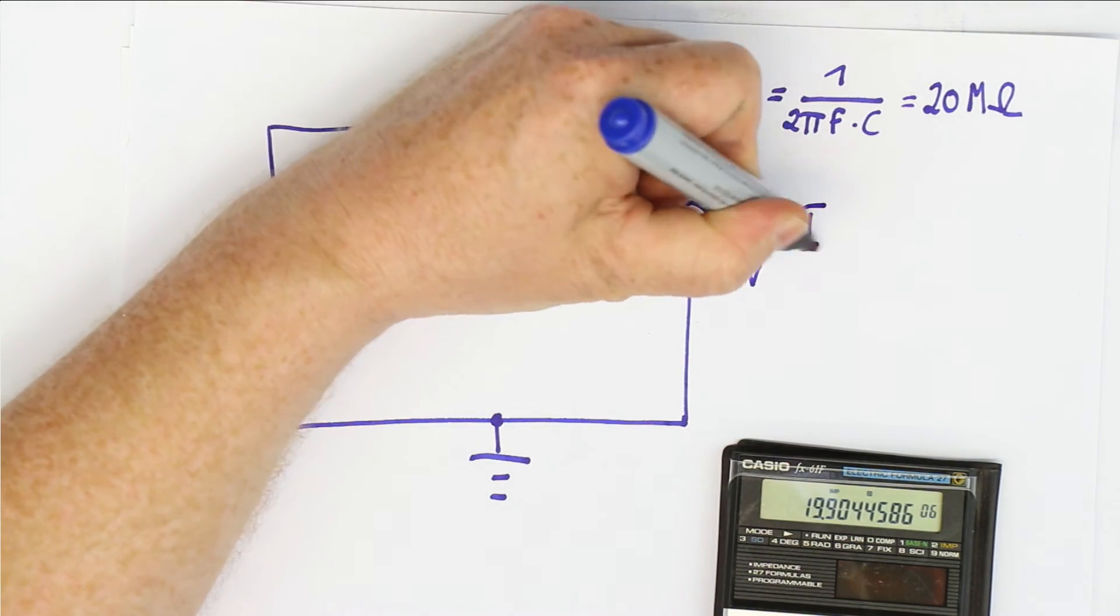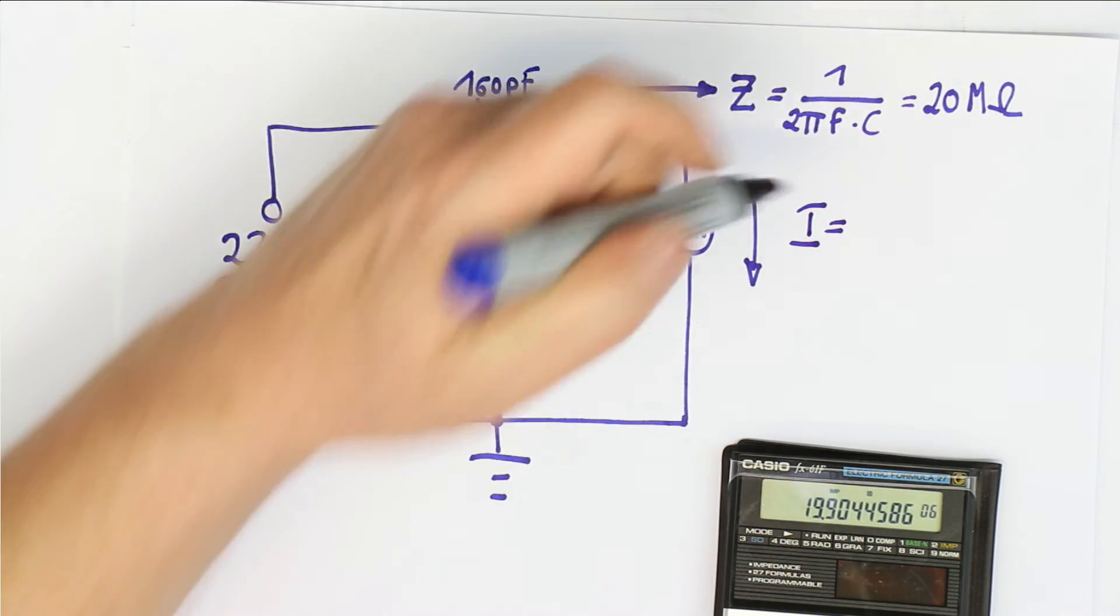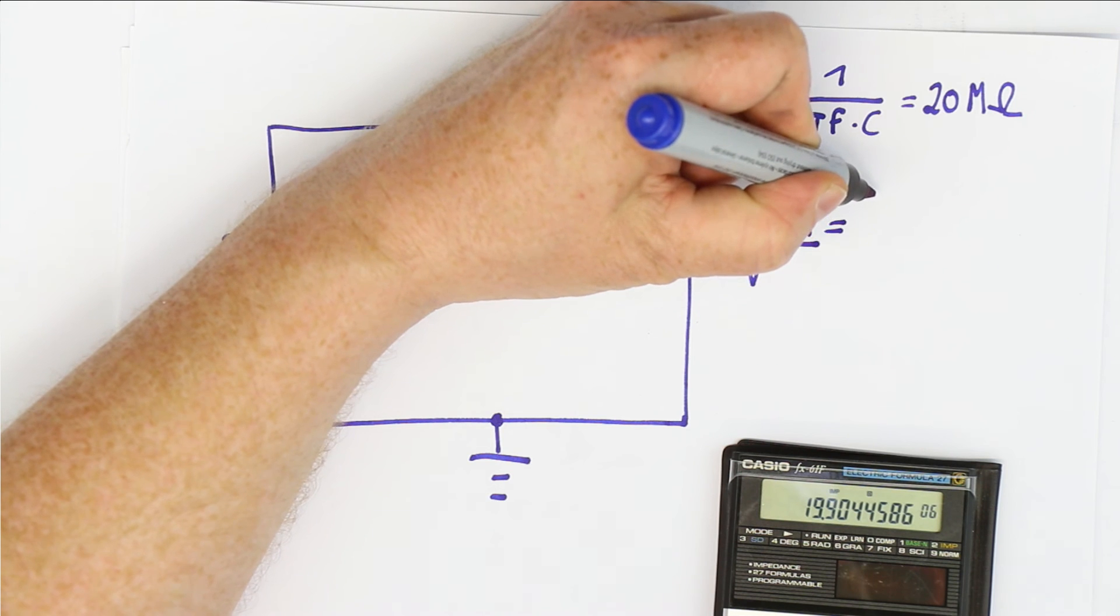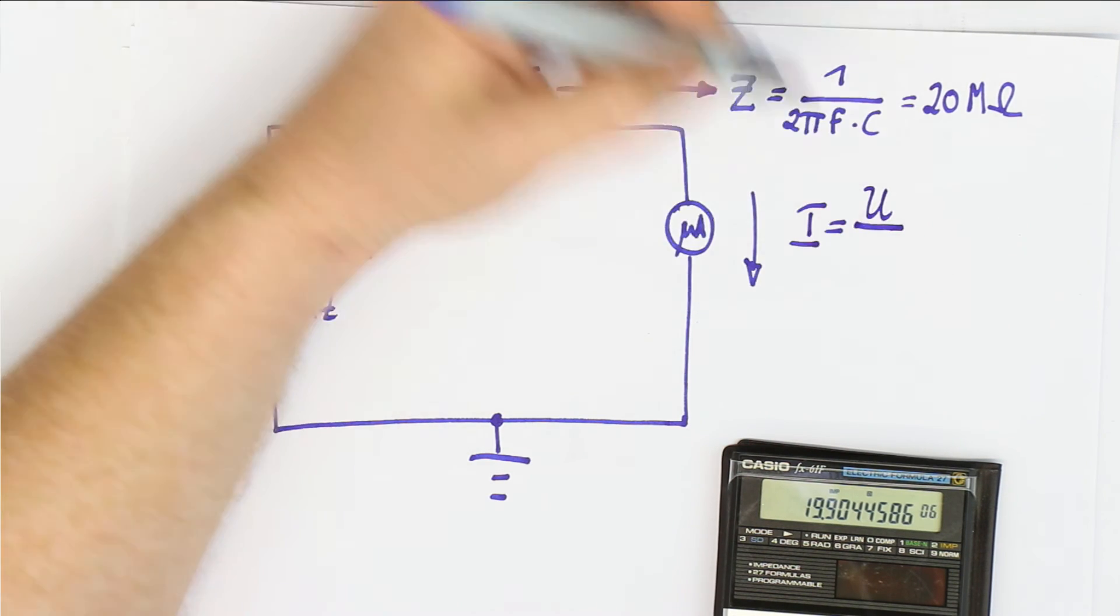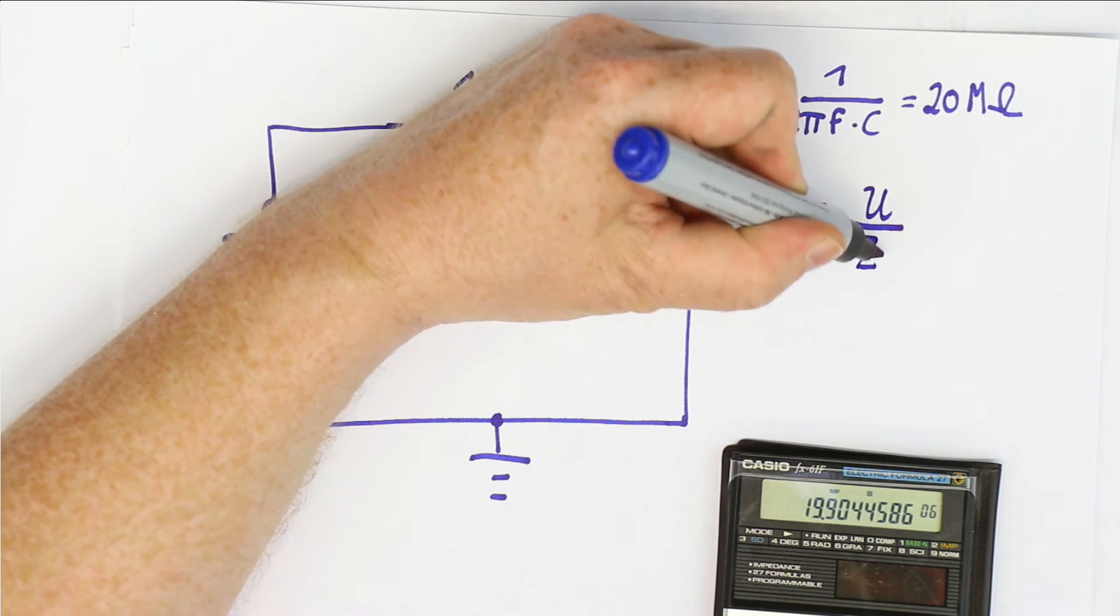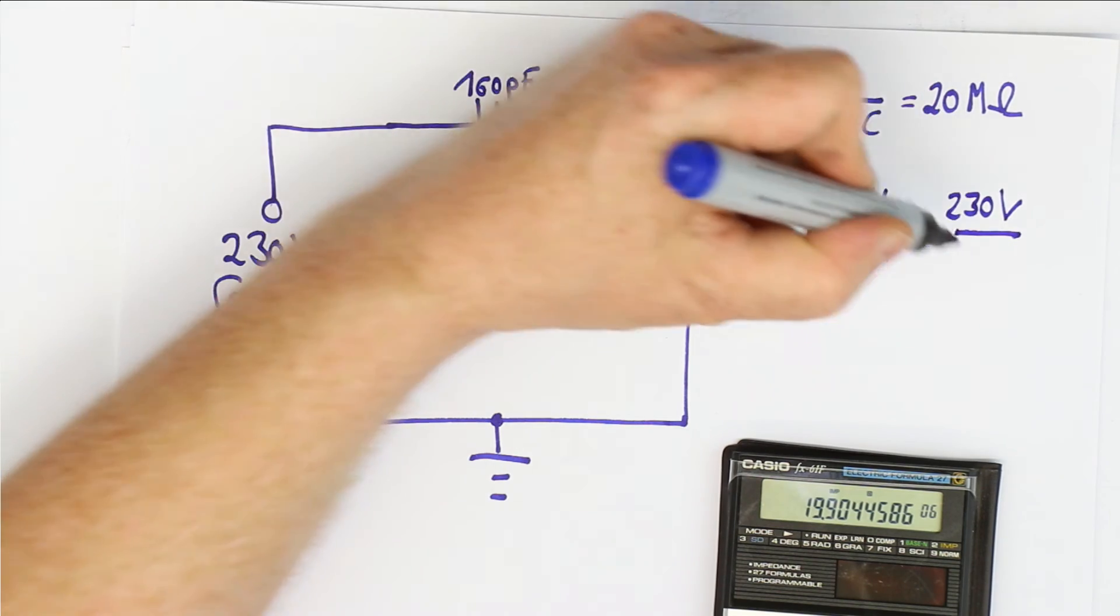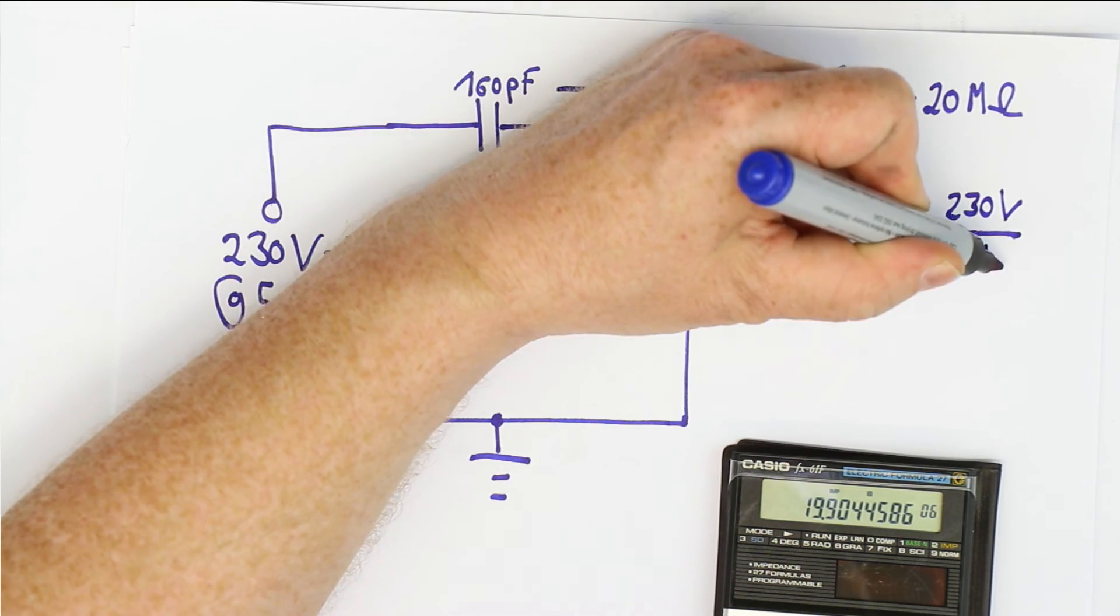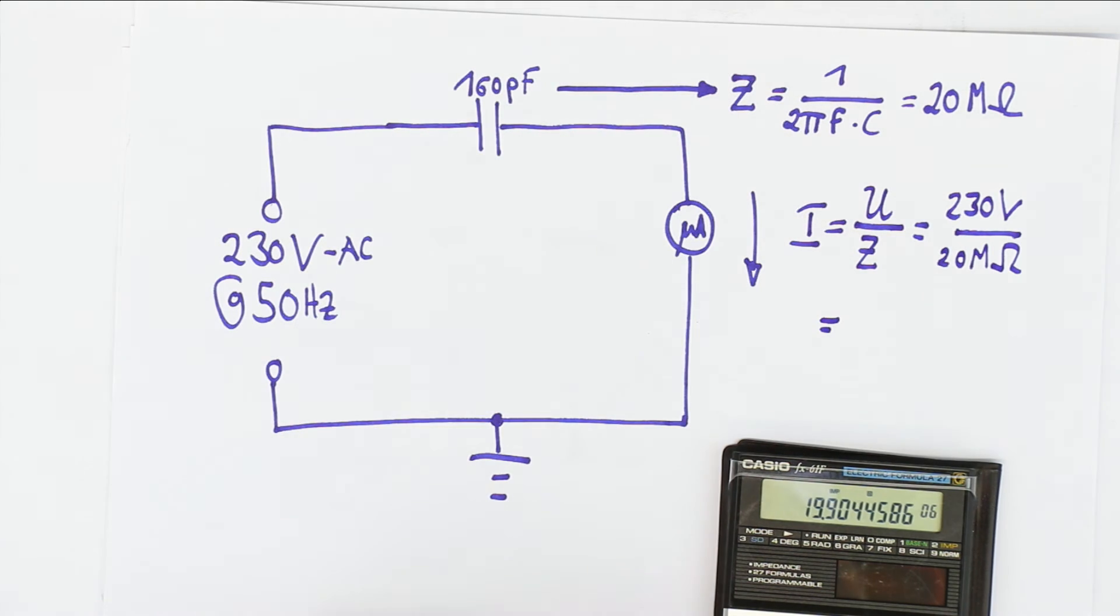What current do we get through at 230 volts and an impedance of 20 megohms? Well, the current, according to Ohm's law, which is also valid for AC voltage, is the voltage divided by—well, usually resistance, here we take the impedance—and that is 230 volts divided by 20 megohms, and that gives us surprise, surprise, 12 microamps.